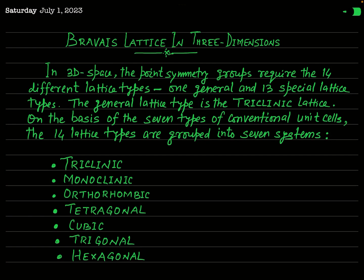In the first part of the lecture on Bravais lattice, we have seen the discussion on Bravais lattices in two dimensions. There are five types of Bravais lattices in two dimensions: the oblique lattice, primitive rectangular lattice, centered rectangular lattice, square lattice, and hexagonal lattice. Now in the second part of the lecture on the same subject, we are going to discuss the Bravais lattice in three dimensions.